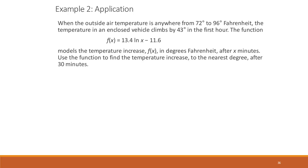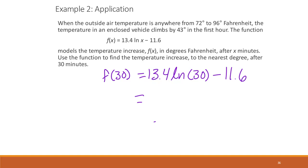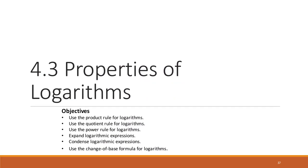Last problem: when outside air temperature is 72 to 96 degrees Fahrenheit, the temperature in a closed vehicle climbs 43 degrees in the first hour. The function f(x) = 13.4 ln(x) − 11.6 models the temperature increase in degrees Fahrenheit after x minutes. Evaluating at x = 30 gives approximately 34 degrees. That concludes section 4.2; next time we'll work on 4.3.